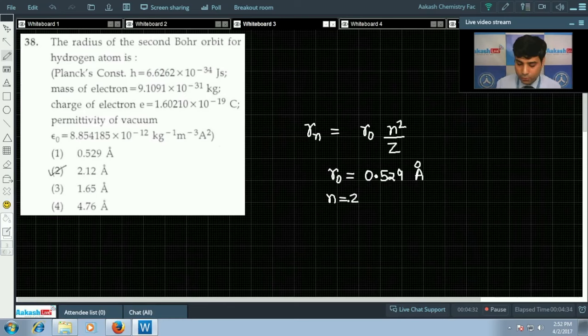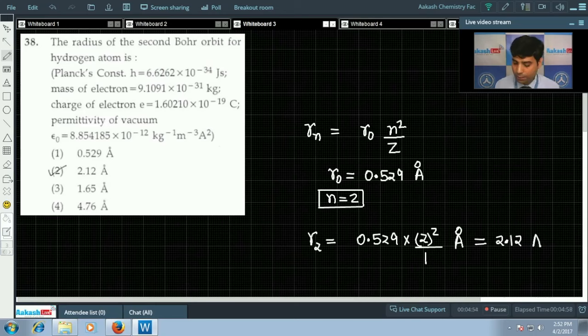Let us put the value. The value of n equals 2. Radius of second orbit will be 0.529 into 2 square, and atomic number of hydrogen is 1, this much angstrom. When you solve this, we'll get the result 2.12 angstrom approximately. So the correct answer for this question is option 2, that is 2.12 angstrom. Now let's move to question number 39.